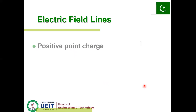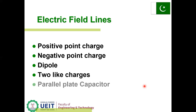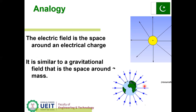Electric field lines can originate from a positive charge or terminate at a negative point charge, and can also be seen in a dipole, two like charges, or a parallel plate capacitor. There is an analogy where positive charges accumulate on a sphere — the electric field lines point outward from the surface. Similarly, the gravitational field points towards the center of the Earth.